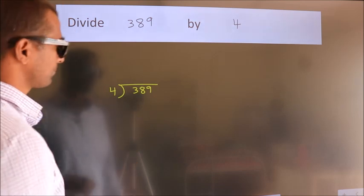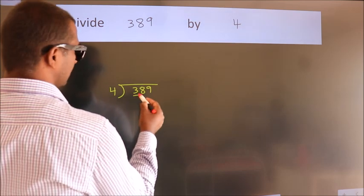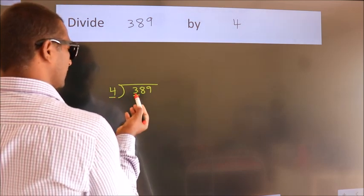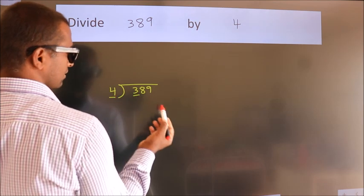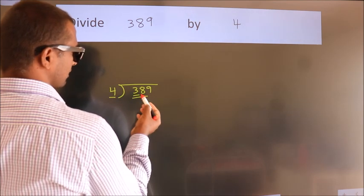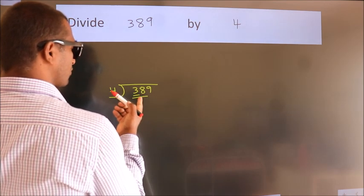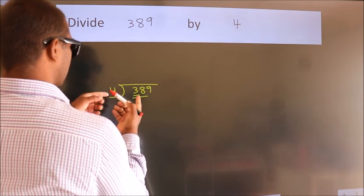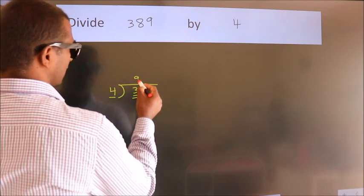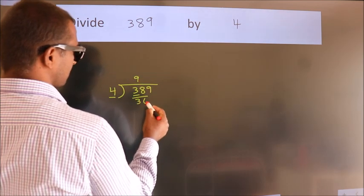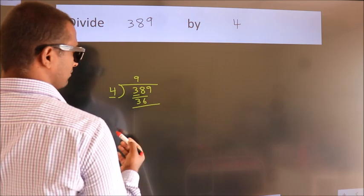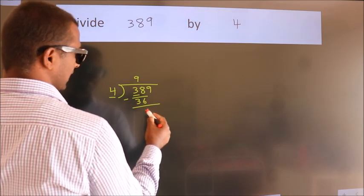Next. Here we have 3, here 4. 3 is smaller than 4. So we should take 2 numbers, 38. A number close to 38 in 4 table is 4 nines, 36. Now we should subtract. We get 2.